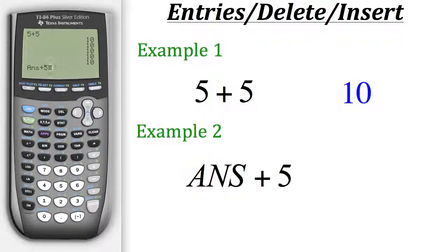Now you may notice that in our entry the calculator automatically put in this ANS at the start. This is short for answer, referring to the result from our previous entry that being 10. So if we hit enter at this point it'll take our previous result of 10 and then add 5 to it giving us a value of 15.